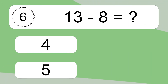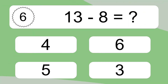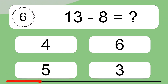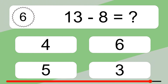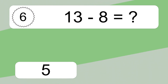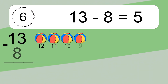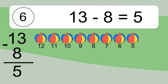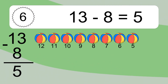13 minus 5 equals 5. Let's count it. 12, 11, 10, 9, 8, 7, 6, 5. 13 minus 5.